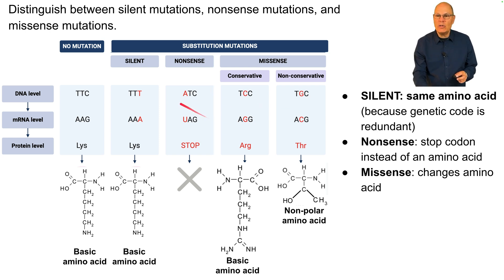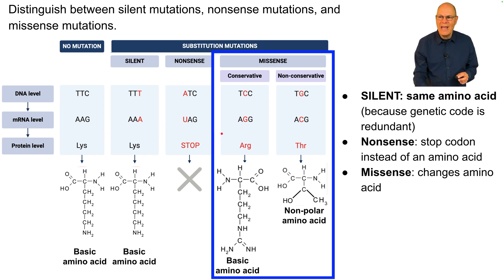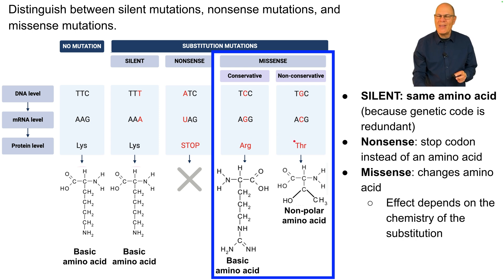A missense mutation changes the amino acid from one to another. We see a silent mutation over here — the original DNA codes for lysine, and despite the mutation, it still codes for lysine. Here's a nonsense mutation where instead of lysine, we have a stop codon. And here we have missense mutations: one is coding for arginine instead of lysine, and one is coding for threonine.